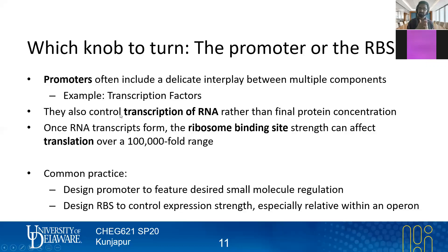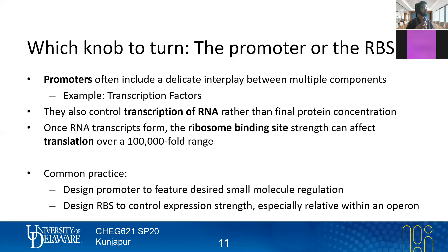A promoter — if you imagine that you've made a promoter 10 times stronger, you have increased the amount of RNA by tenfold. But RNA is not your final product. And so you can tune the level of RNA, and in fact you have a certain range that you can titrate that. But if you want to be able to change the protein concentration, the ribosome binding site strength is actually able to affect translation over a 100,000-fold range, which is a wildly powerful range of different expression strength to explore.